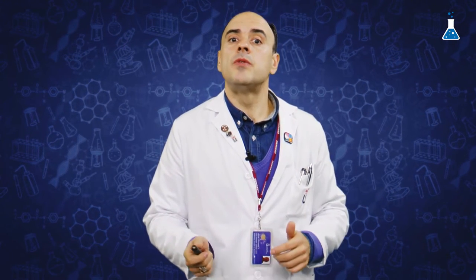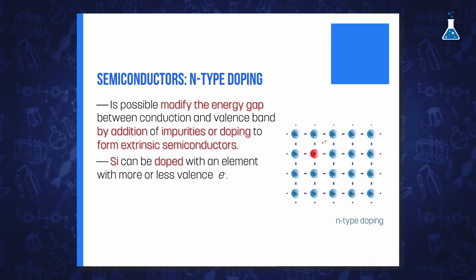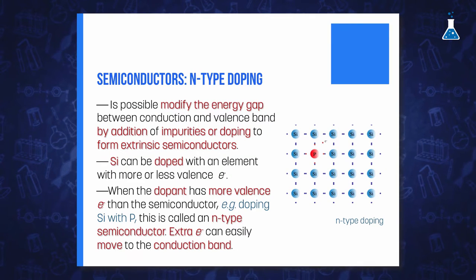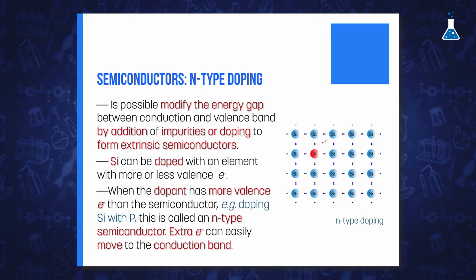Silicon can be doped with phosphorus, which has five valence electrons. The phosphorus atom is called a donor atom because, apart from the four electrons used for bonding with silicon, the fifth electron can easily move to the conduction band. This type of silicon is called an N-type semiconductor.